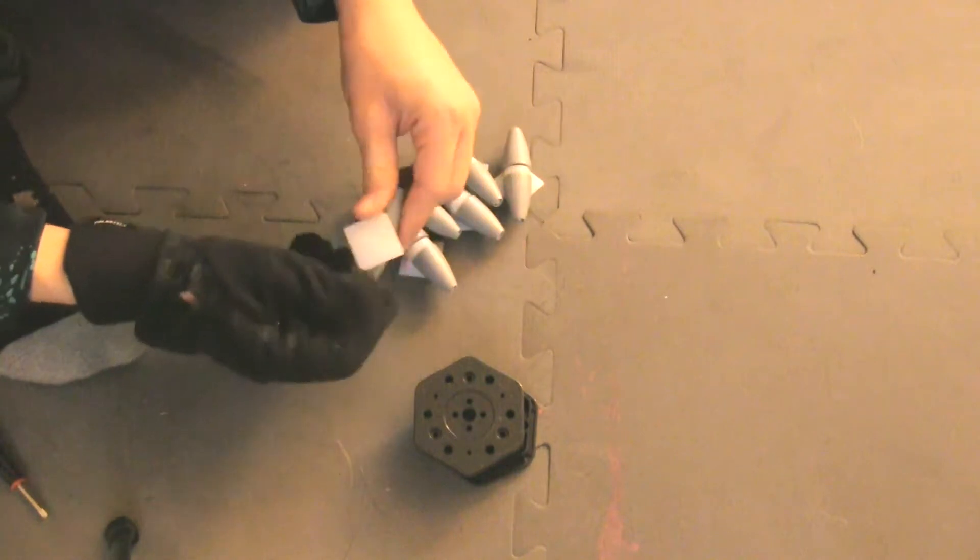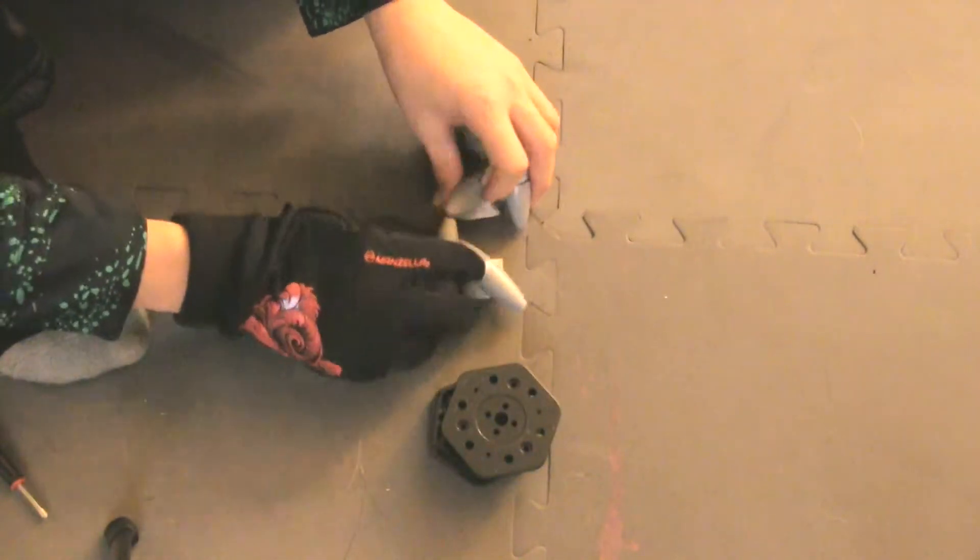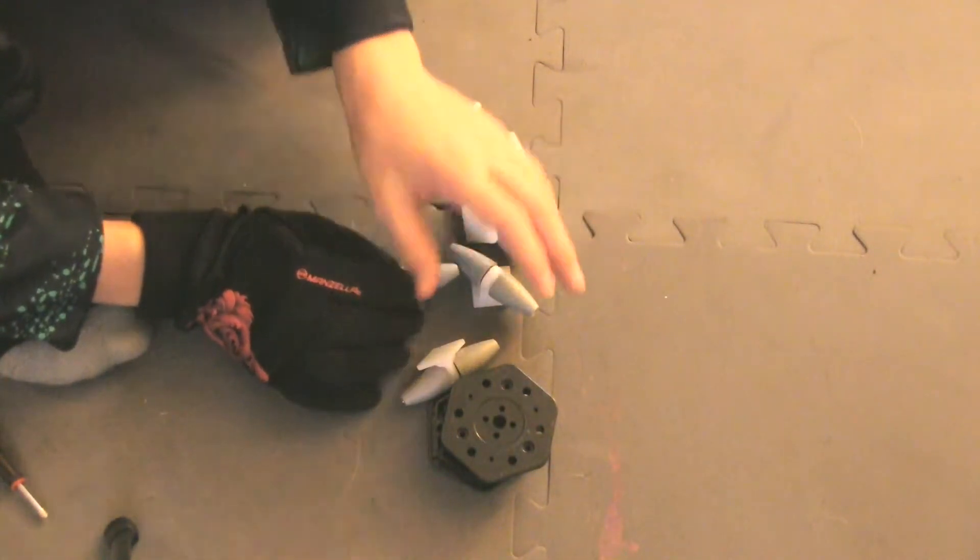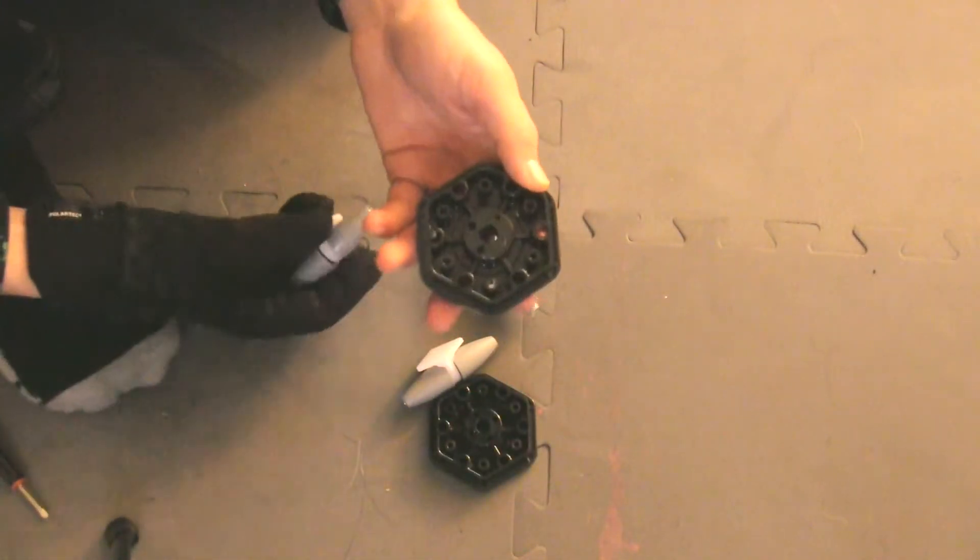So here we go. We have all six of these little sub-assemblies. If you've done it correctly, you should have six. Now that they're all functioning and free-spinning and everything's good, we're going to move on to the next step.